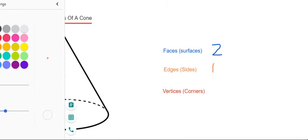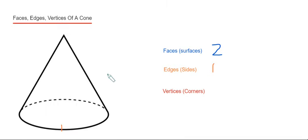The vertices are the corners of the shape or the sharp bit. We've just got one corner at the top there.